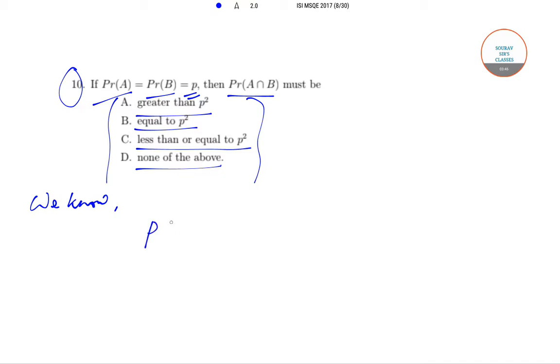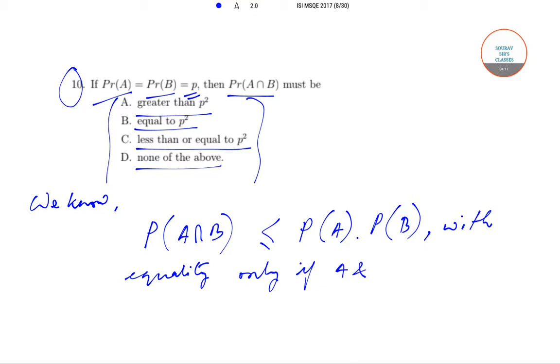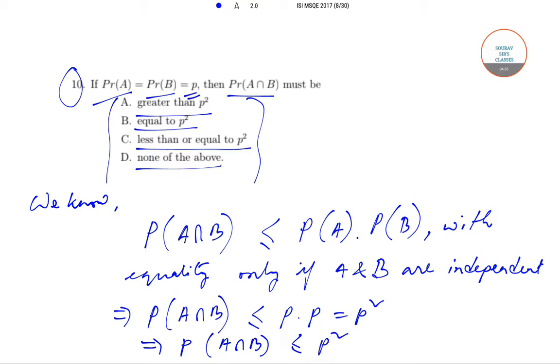We know that probability of the event A intersection B is always less than or equal to probability of A into probability of B, with equality only if A and B are independent. So we get that probability of A intersection B will be less than or equal to p into p, that is equal to p square. This implies that probability of A intersection B is less than or equal to p square, which is option c.